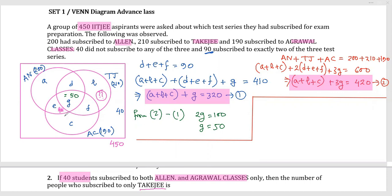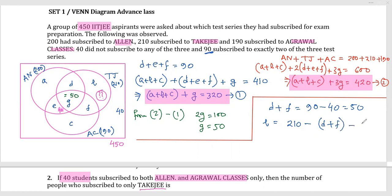With e equals 40, I can find d plus f: since d plus e plus f equals 90, d plus f equals 90 minus 40 which is 50. Then b equals total TakeG minus d plus f minus g, which is 210 minus 50 minus 50, giving 110. So the answer to question two is 110.